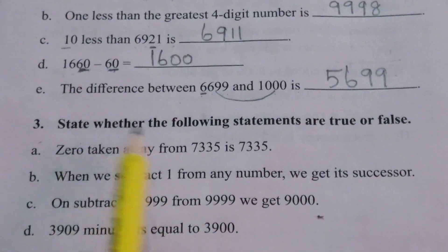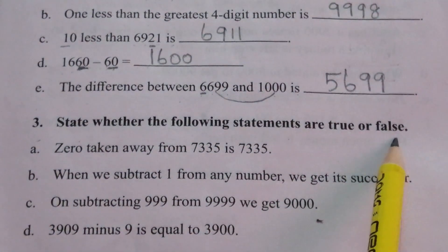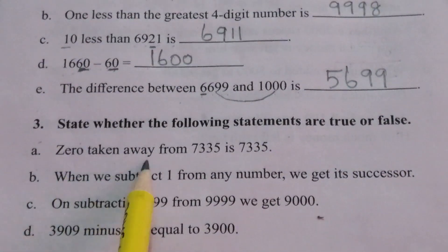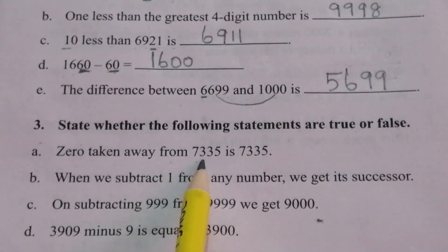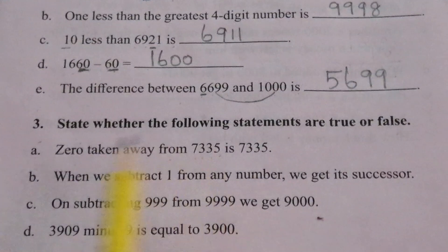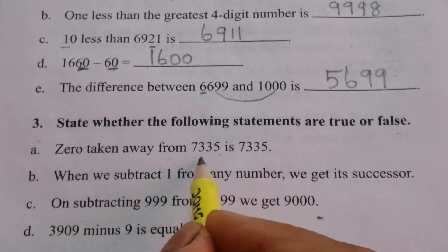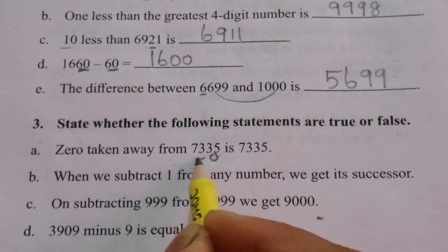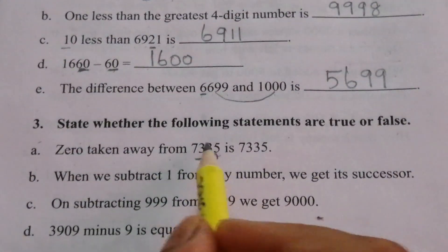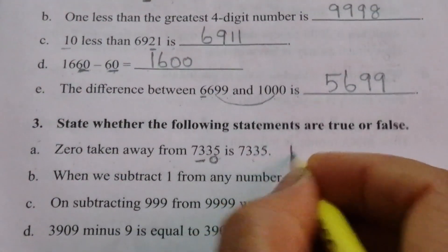Question 3: State whether the following statements are true or false. A: Zero taken away from seven thousand three hundred thirty-five — we subtract zero from this number and get the same number as the answer, so this statement is true.